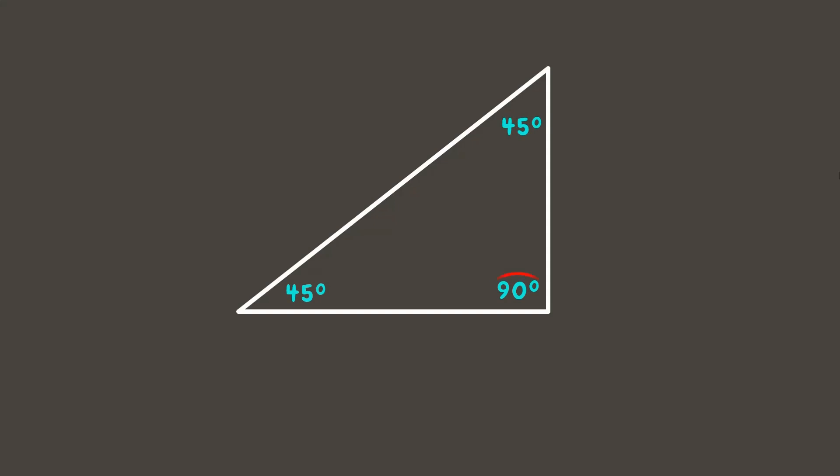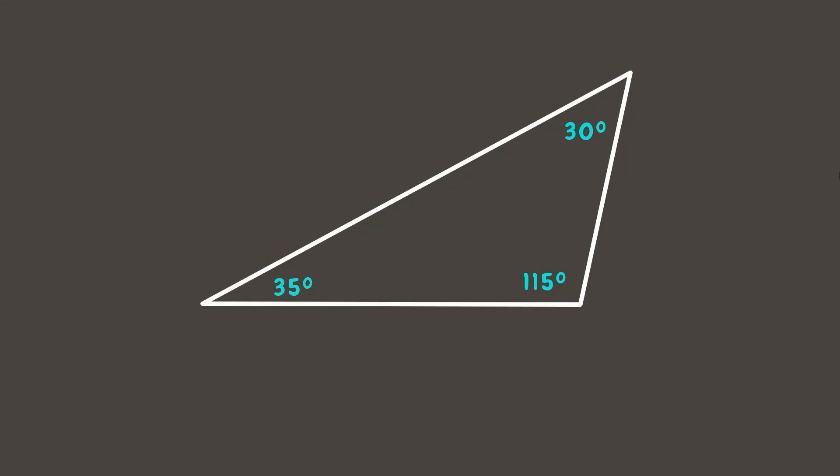Next one. This triangle has a 90-degree angle, which means it has a right angle. Therefore, it is a right triangle. Always remember that the moment you see that a triangle has a right angle, you can already say it is a right triangle. Now if a triangle has an angle measuring more than 90 degrees, that means it has an obtuse angle, and you can already say that it is an obtuse triangle.